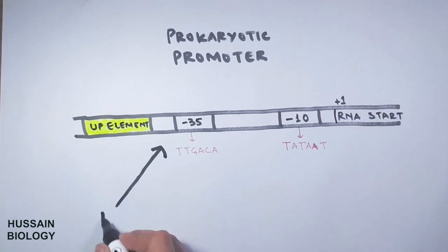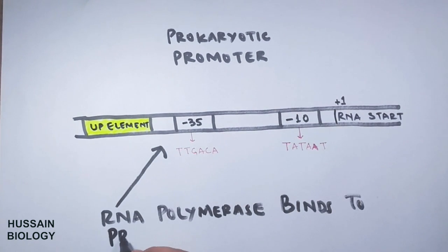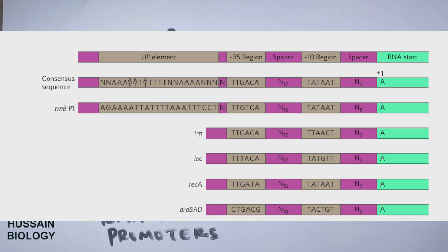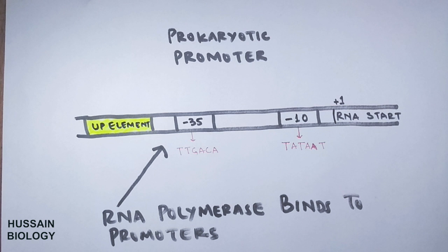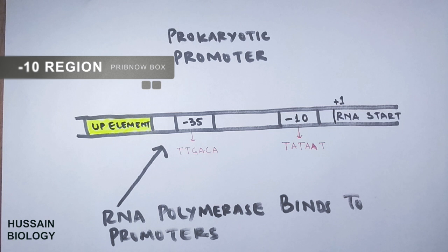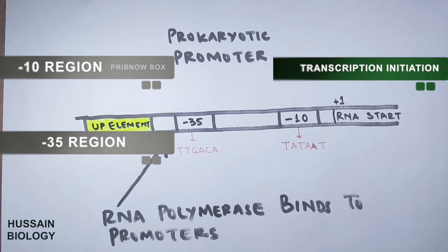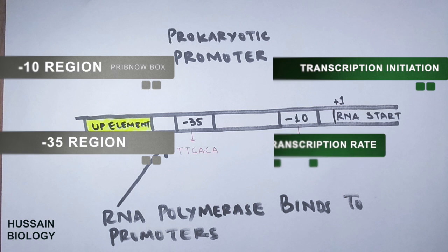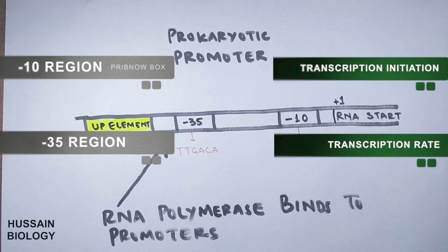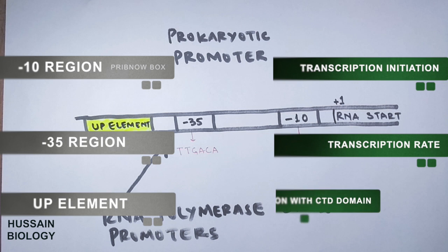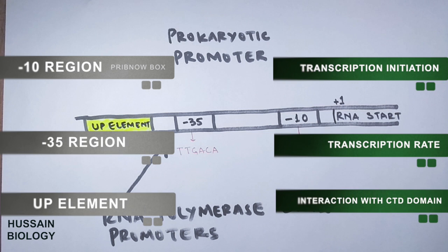The RNA polymerase binds to these regions of the promoter. The table shown here lists different promoters in E. coli for different genes. Looking at the functions of these elements: the minus 10 region, the Pribnow box, has the function of transcription initiation. The minus 35 region governs the transcription rate. The up element shows interaction with the alpha CTD domain of the polymerase enzyme.